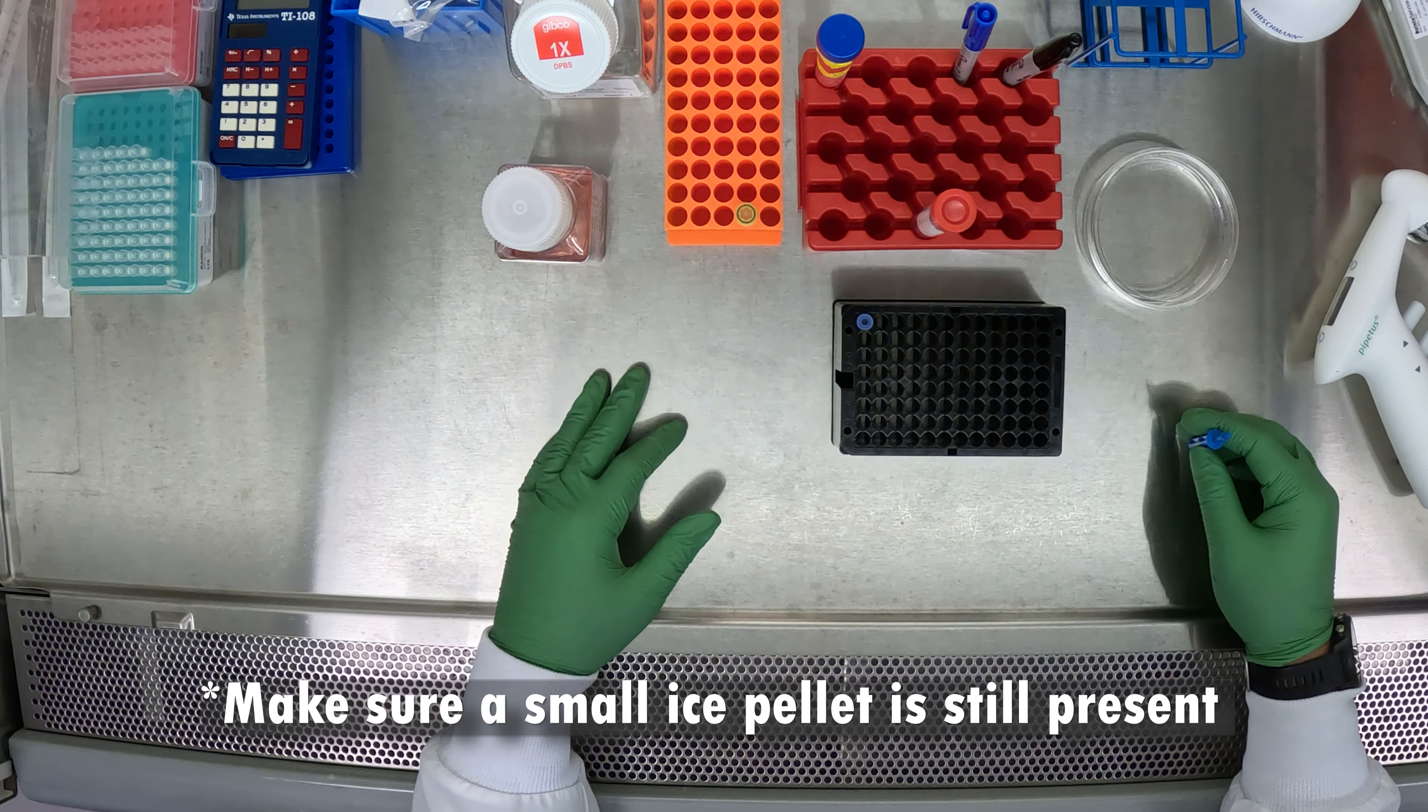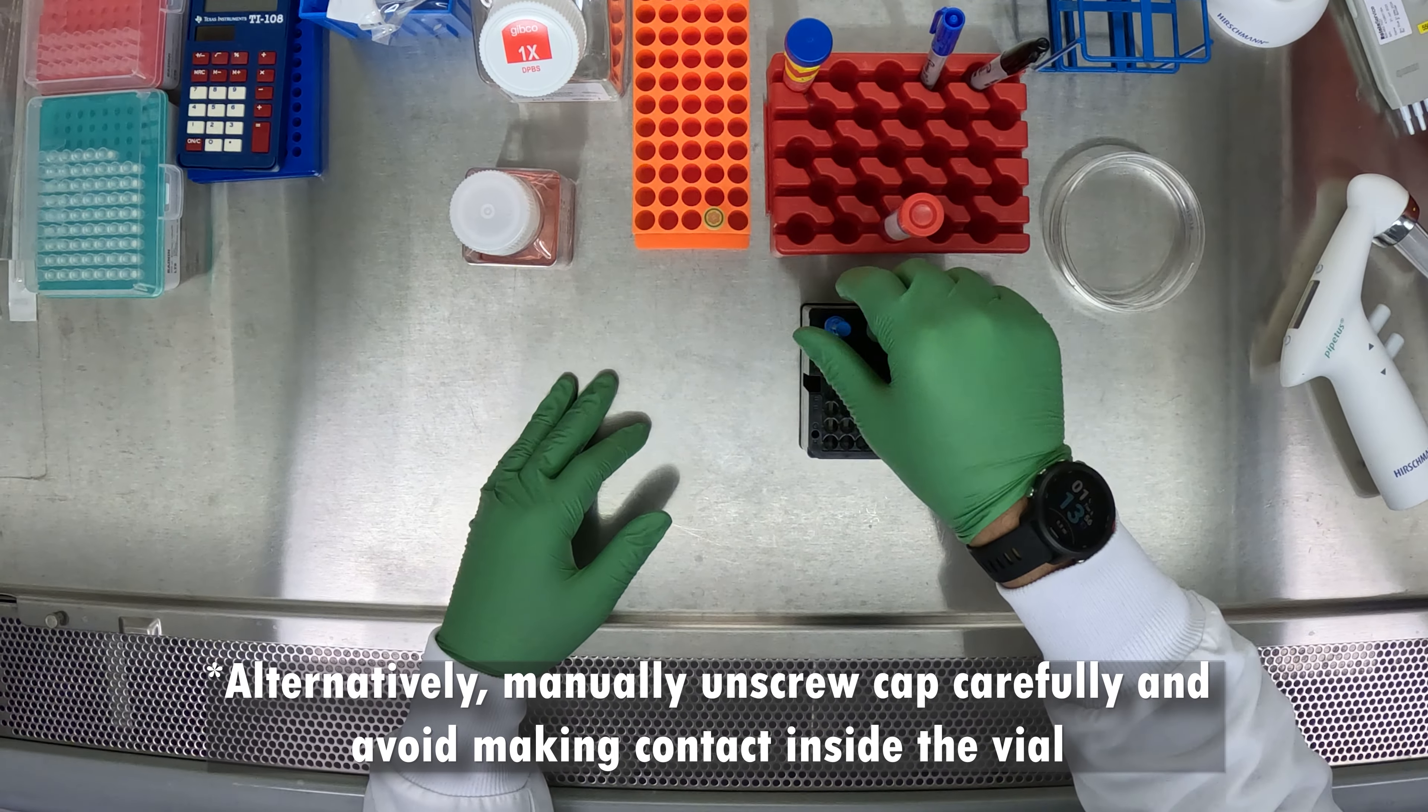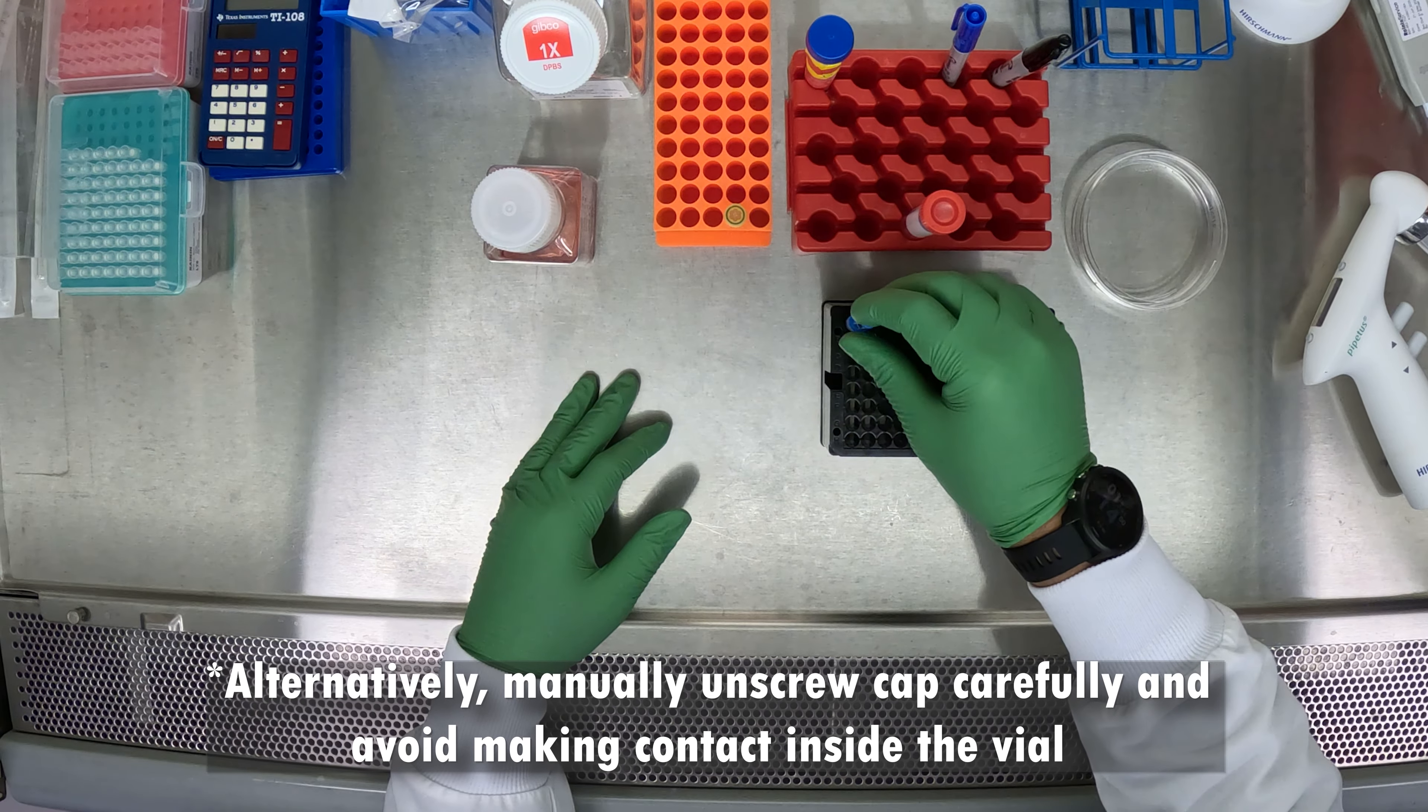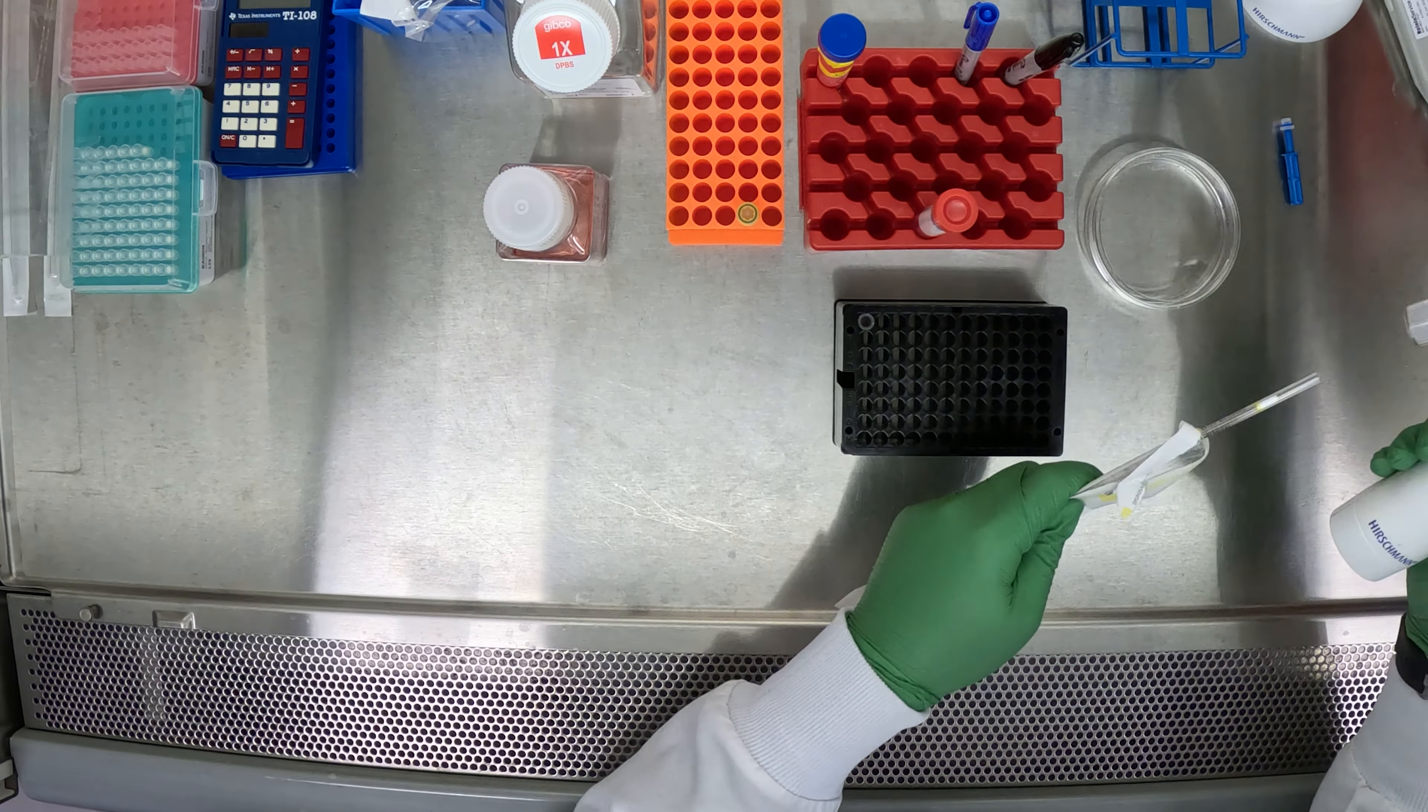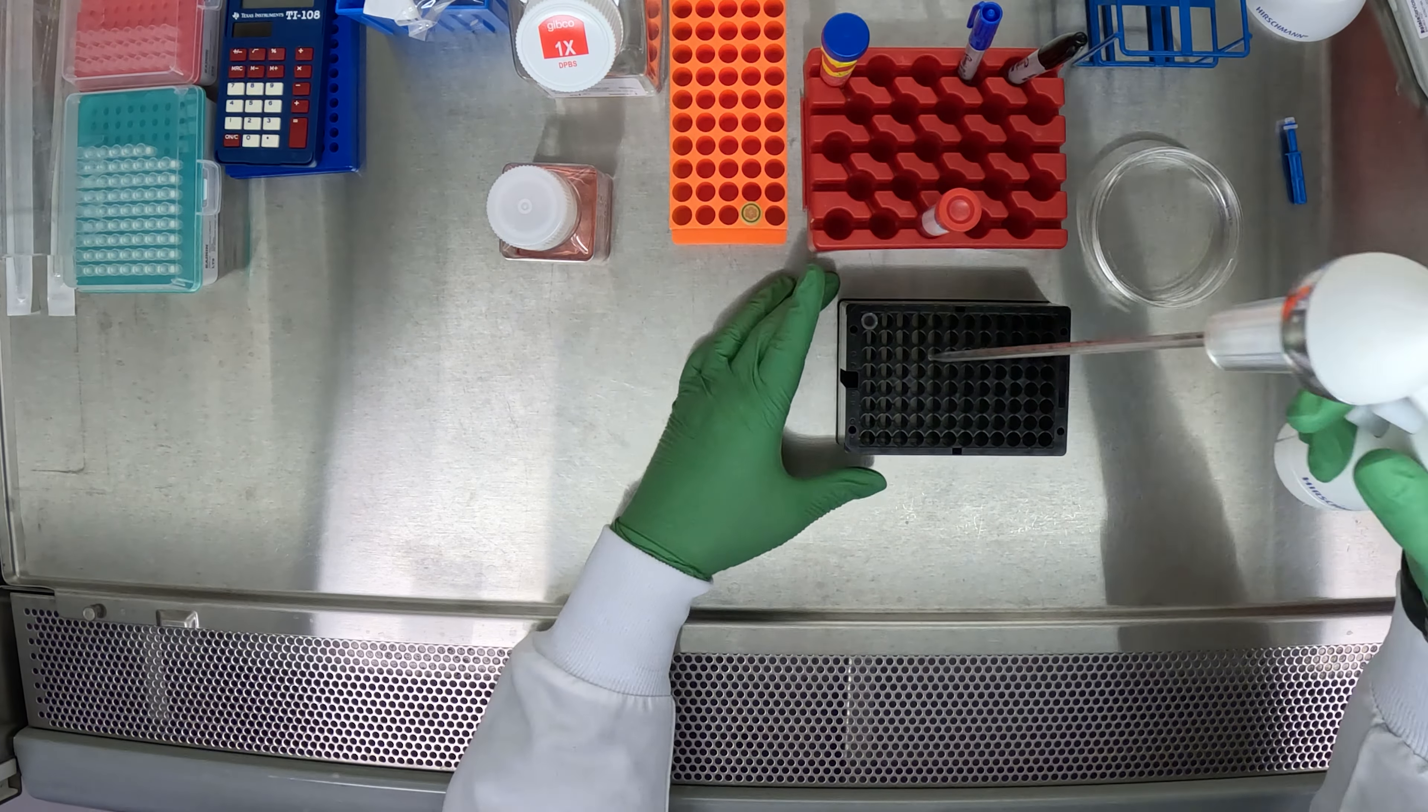Now that we've moved our cells and rack into the biosafety cabinet, gently unscrew the cap, making sure to not make contact with the inside of the vial to ensure everything stays sterile. Once the cap has been removed, use a 1mm aspirating pipette to aspirate the entire volume of the vial and transfer it to our preloaded 15mm conical.